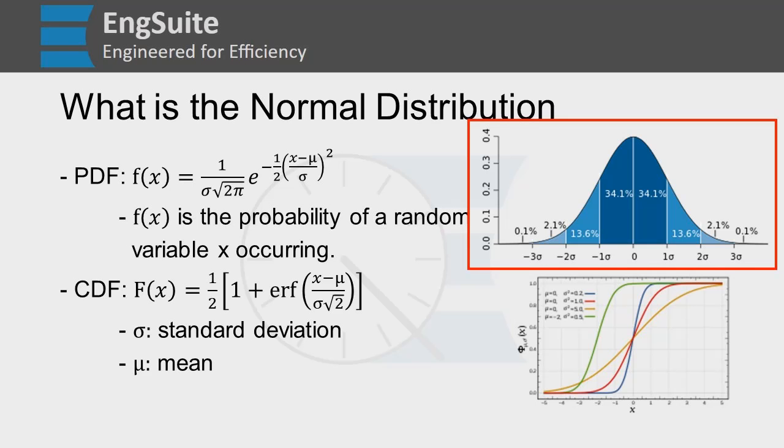That's this graph over here. As you can see, at zero standard deviations away from the mean, we have the highest probability of getting a value that is the mean. And as we step away from the mean, it curves down and our probability gets lower.